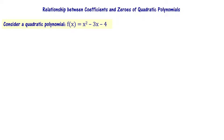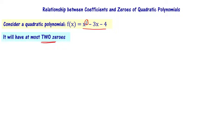Let us consider the relationship between coefficients and zeros of quadratic polynomials. Consider a quadratic polynomial f of x equal to x square minus 3x minus 4. This is a quadratic polynomial where the highest power of x is 2. A quadratic polynomial can have at most two zeros.